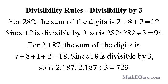Also, for 2,187, the sum of the digits is 7 plus 8 plus 1 plus 2, or 18. Since 18 is divisible by 3, 2,187 is divisible by 3, and 2,187 divided by 3 equals 729.